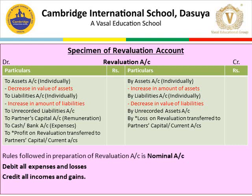On the debit side: decrease in the value of assets is a loss; increase in the amount of liabilities is a loss; unrecorded liabilities is also a loss; and any remuneration paid to a partner is an expense for the organization — all written on the debit side. Revaluation expenses, if any expenses occurred for the revaluation, are also an expense and written on the debit side.